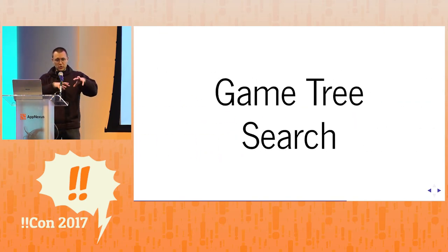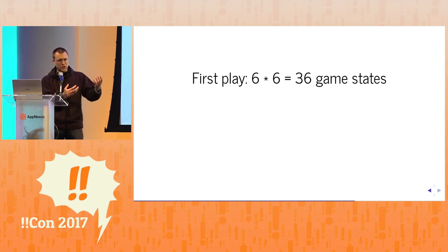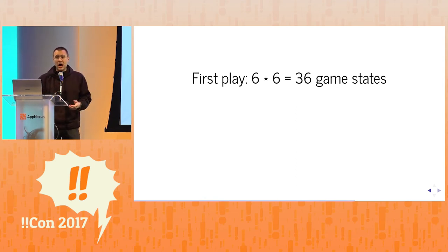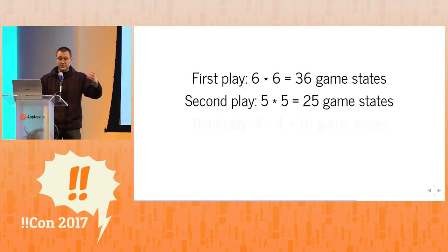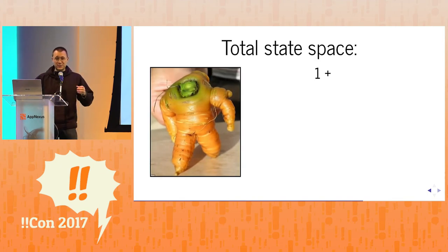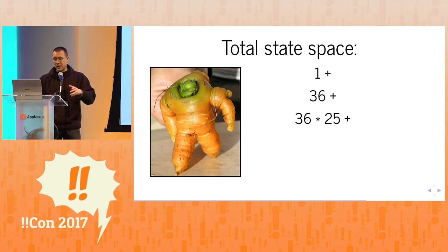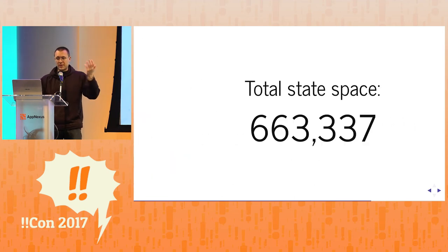Let's talk about how we can search to find a good strategy, and first look at the size of the problem. On the first play there are 36 game states — I have six cards, you have six cards, and we have these combinations. For the second play we have 25, and so on. If we add this up, our total state space is one initial state, plus 36 possibilities for the second play, plus 36 times 25 for the third, and so on. It actually gets pretty large — around 600-something thousand of them.